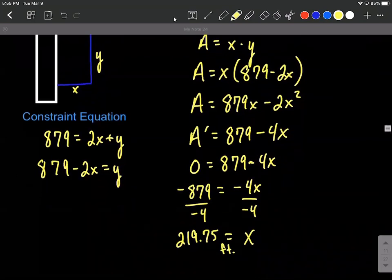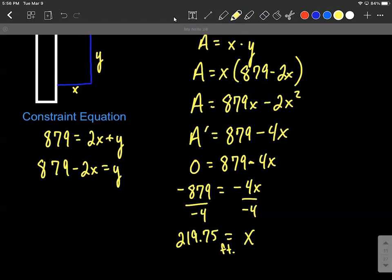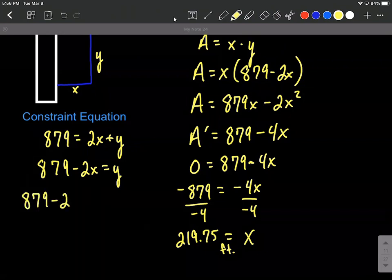So that's a value for X. Next, we want to find a value for Y, the long side according to my diagram. What we do is go back to the constraint equation and plug the number we found in for X. So 879 minus two times 219.75, and that works out to be 439.5 feet of fencing for our Y value.